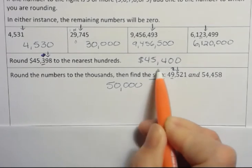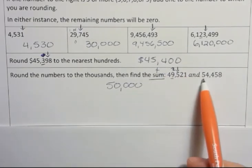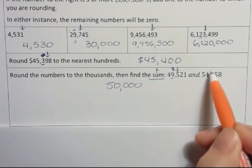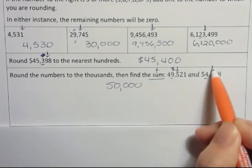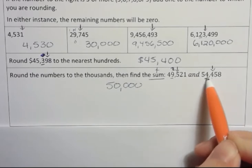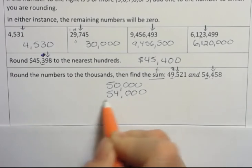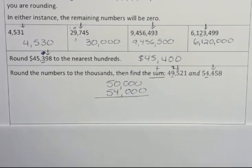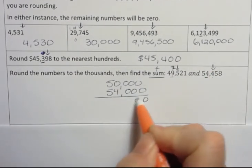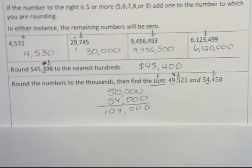Now this is a sum, which means we're going to add. And then here, when we round this one to the thousands, we're rounding here, we're looking here, and this 4 is less than 5, so we're not going to change anything here, and that's going to be 54,000. And now that we've rounded them both to the thousands, we find the sum by just adding those up. We get 104,000.